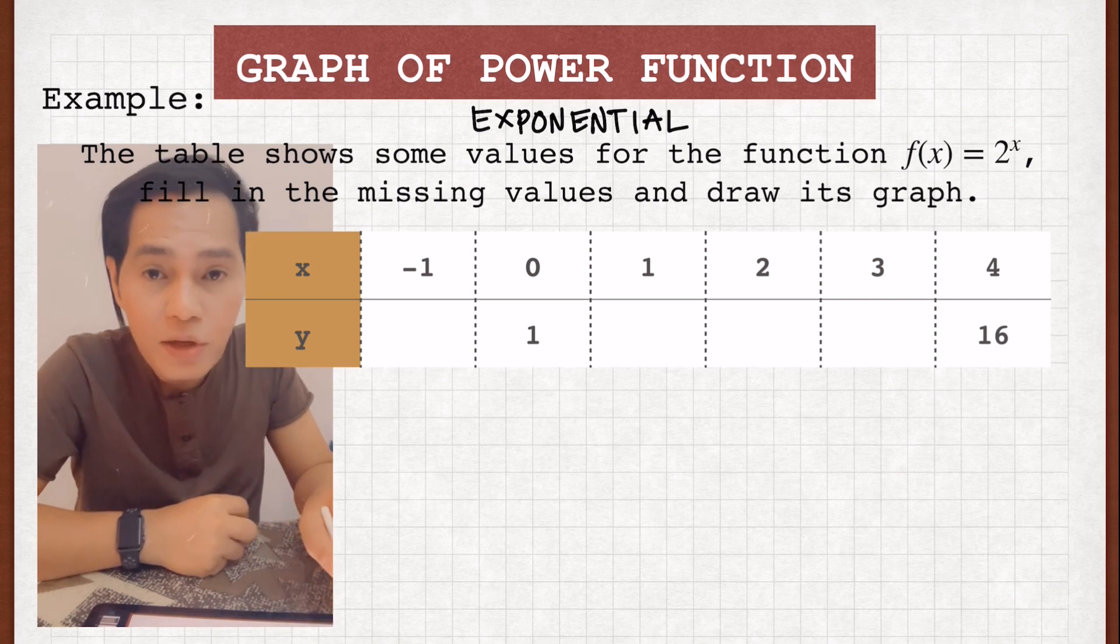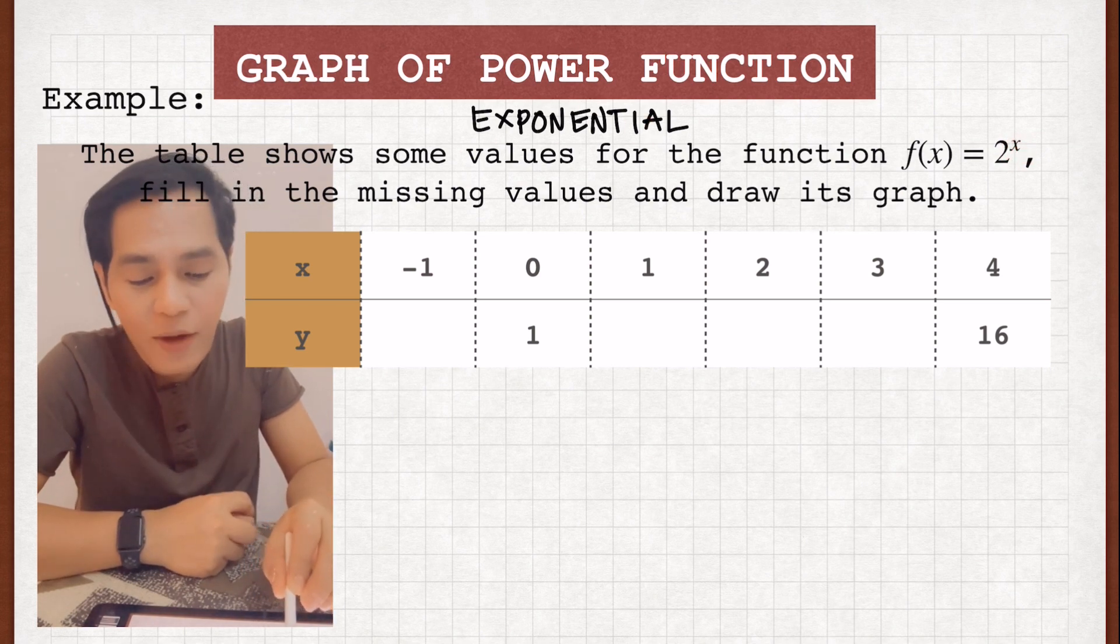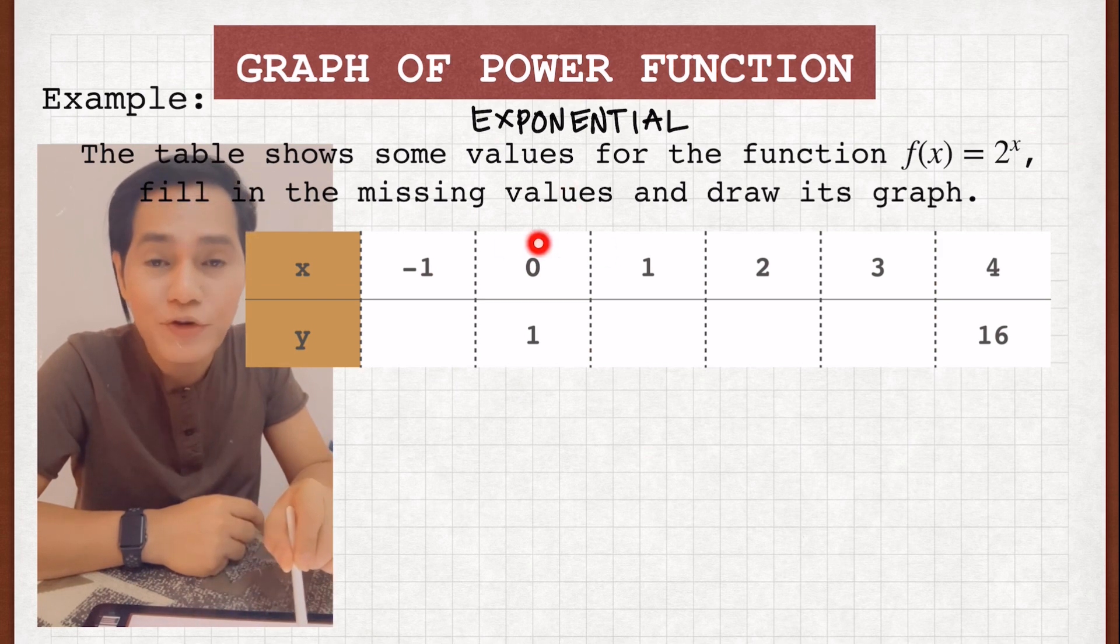Now why? Because the variable here is a power or an exponent. That's why we call it an exponential or power function. Our task here is to fill in the missing values and draw its graph.